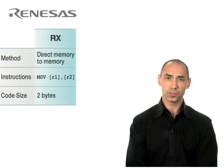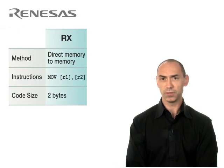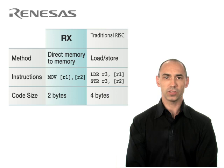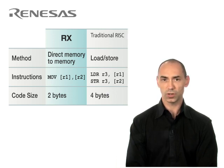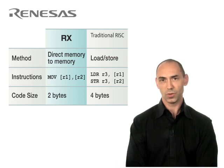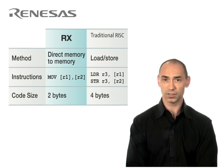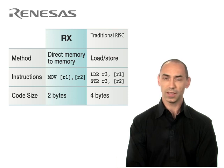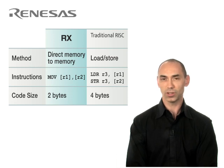As we've seen with RX, it's possible to perform a direct memory-to-memory move, and the corresponding move instruction is only 2 bytes long. If we compare that to a traditional RISC architecture, we can see that load and store instructions are required, which even in architectures that have compact instructions of 2 bytes, still requires 4 bytes of code. With this one example, you can start to see the benefit of RX's CISC-like abilities. Performing direct memory operations allows RX to avoid lengthy load and store operations typical of RISC architectures, thereby resulting in smaller code size.